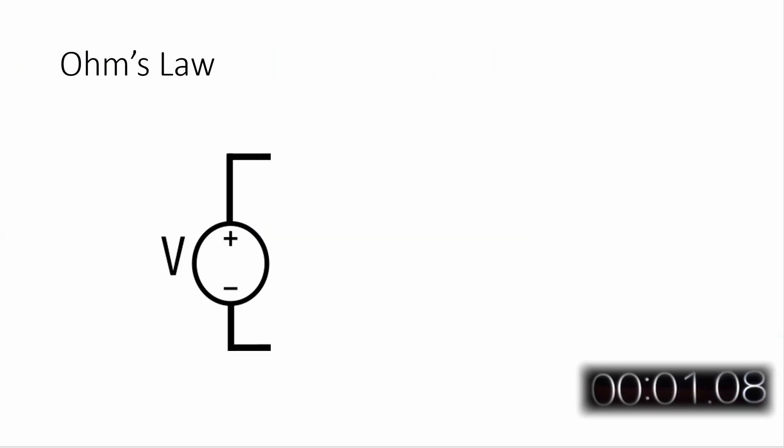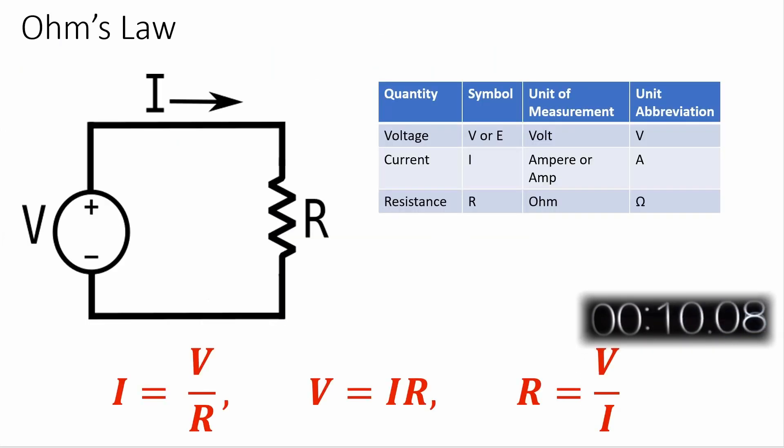Ohm's Law describes the relationship between voltage applied to a circuit, or element in a circuit, the resistance of the circuit or element, and the resulting current in that circuit. This relationship is linear, and states that the current in a circuit is directly proportional to the voltage applied, and this constant of proportionality is called the resistance.